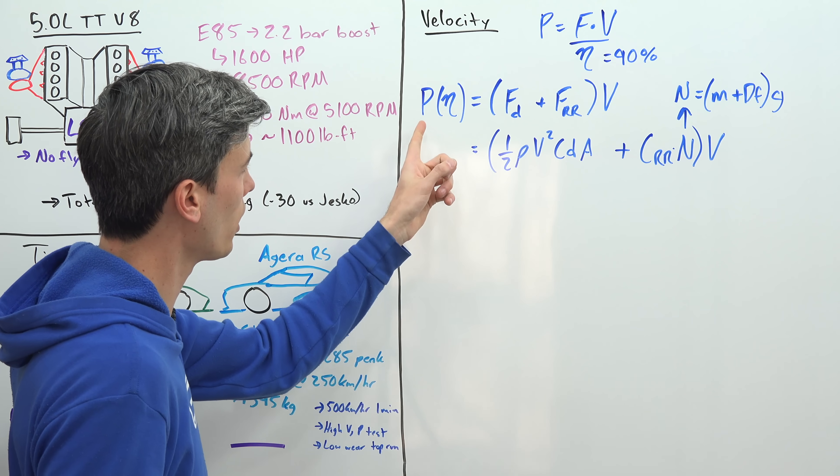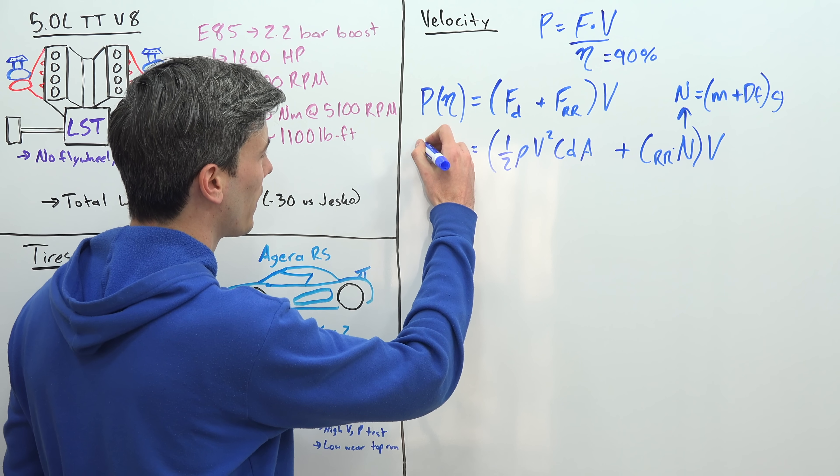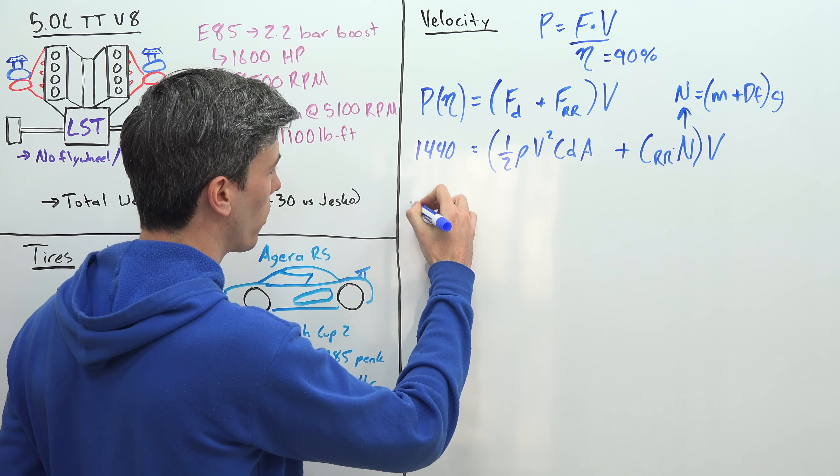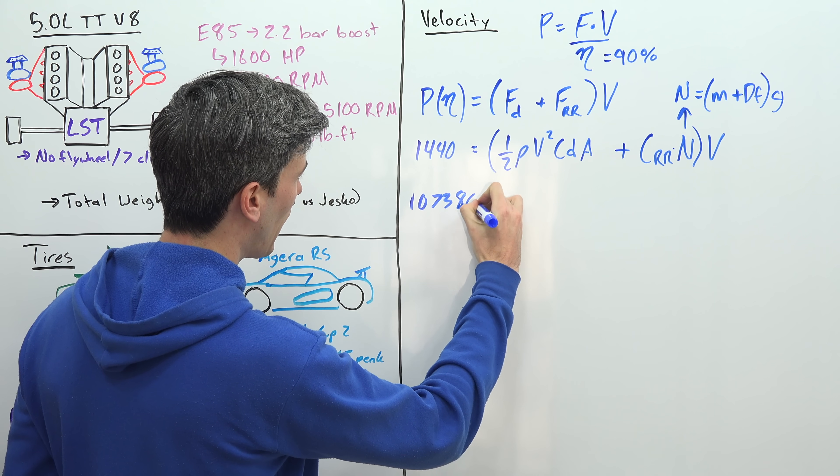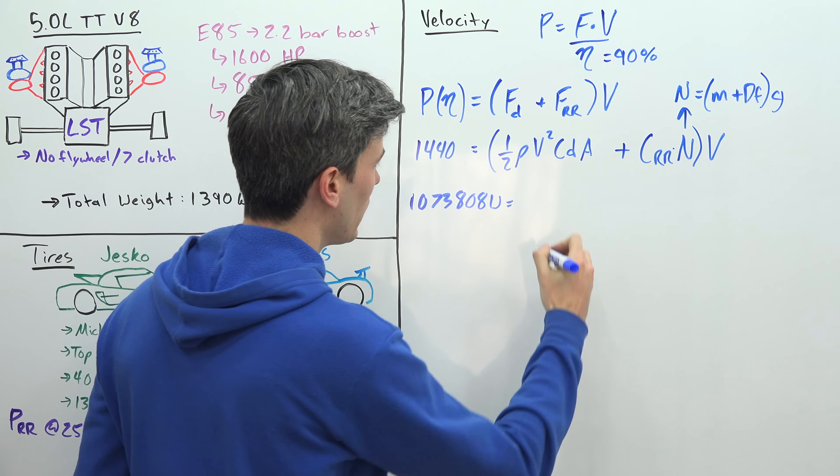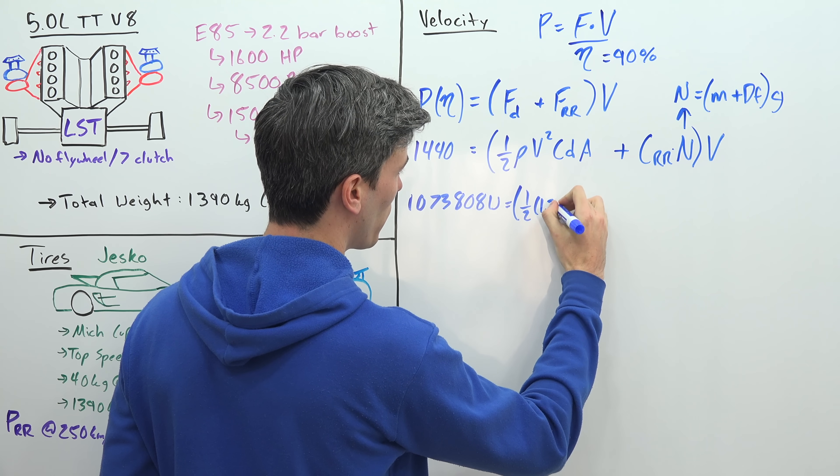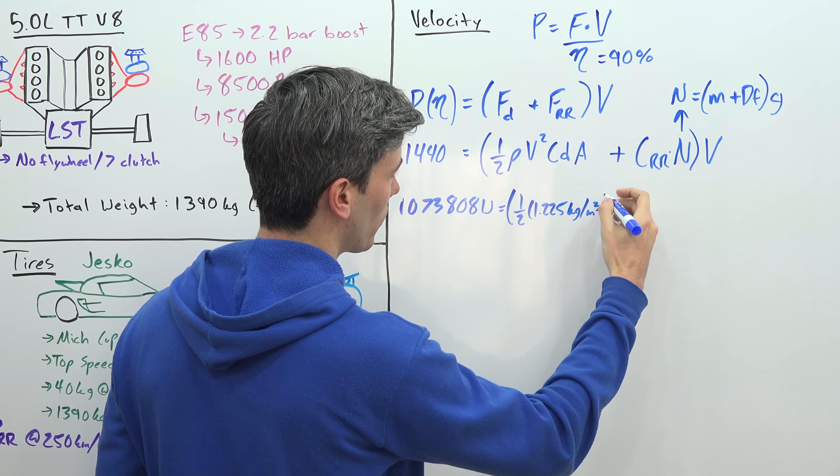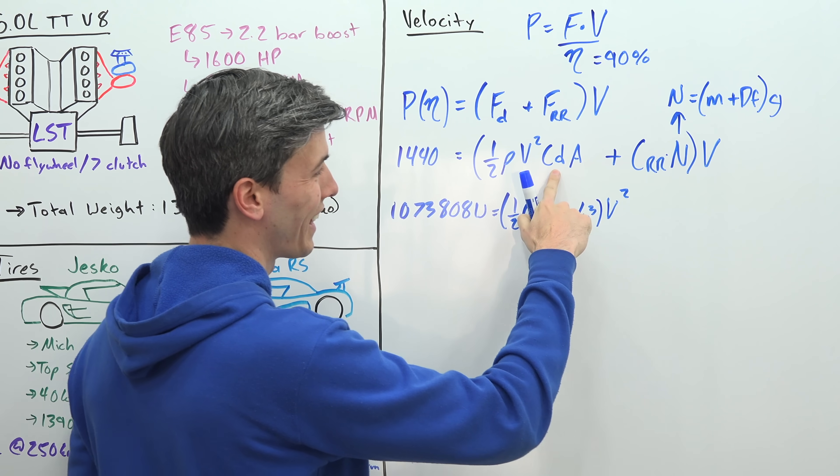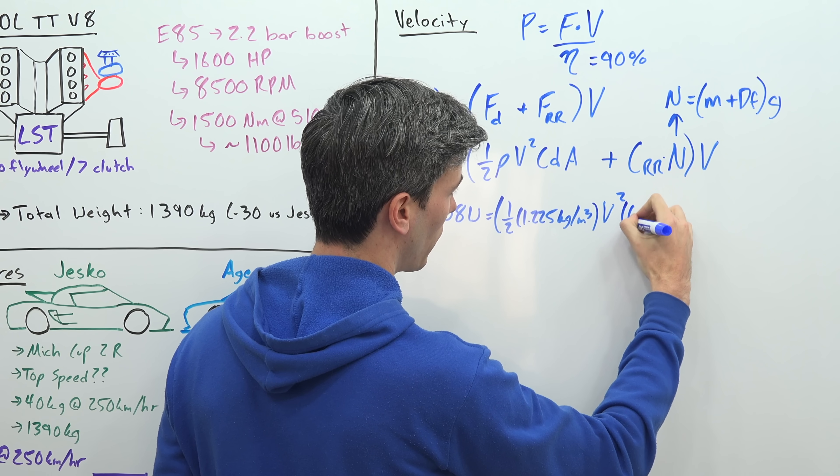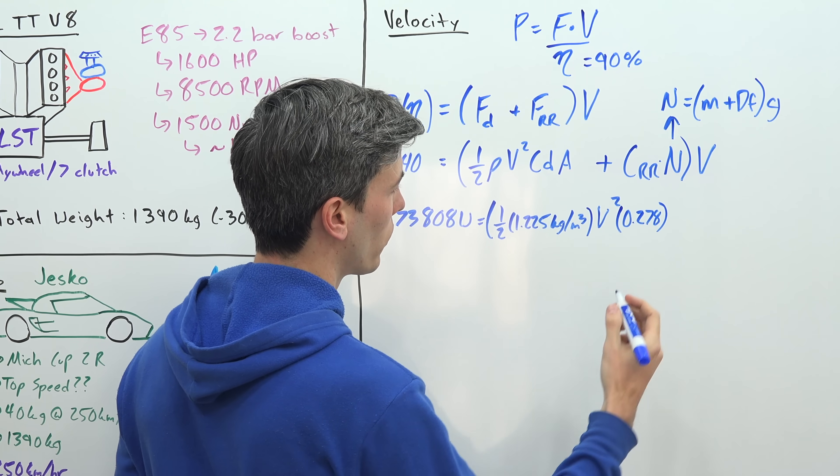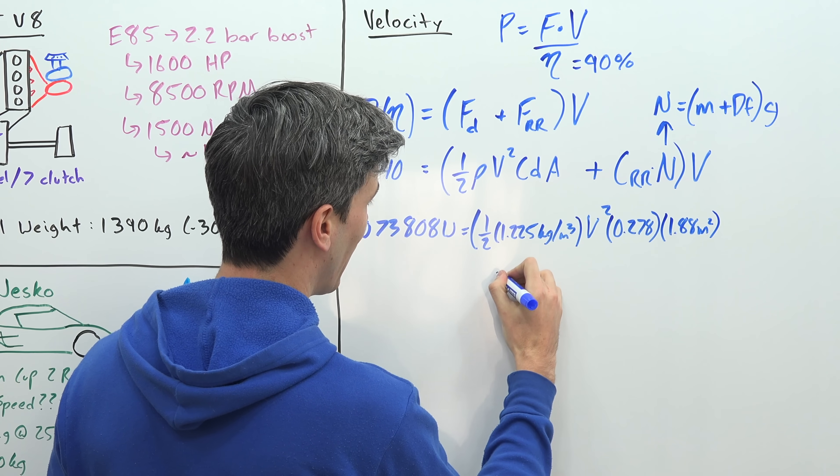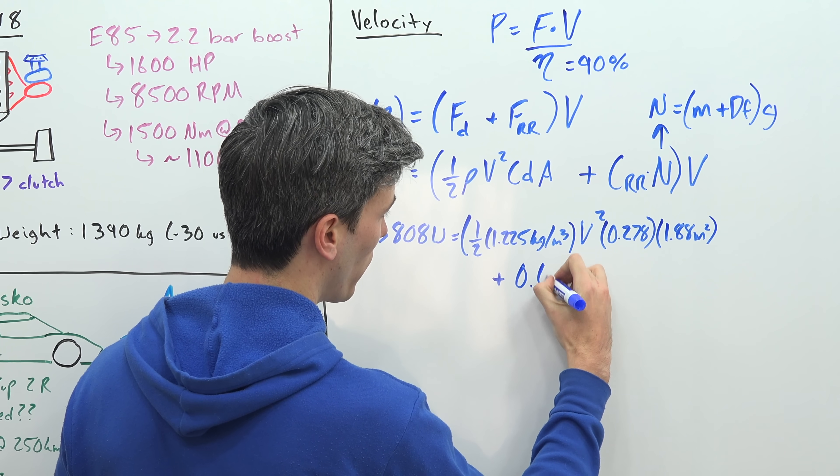So now we can start filling out the numbers. So we know we have 1,600 horsepower. We multiply that by 90% and that gives us 1,440 horsepower. However, we want this in units of watts. So 1,440 horsepower is equal to 1,073,808 watts. We set that equal to 1/2 air's density. We're going to use 1.225 kilograms per meter cubed - that's at sea level with 15 degrees Celsius. We're going to multiply that by our velocity squared, multiplying that by our drag coefficient of this vehicle, which again is that impressive 0.278. We're multiplying that by the frontal area of the vehicle, 1.88 meters squared.